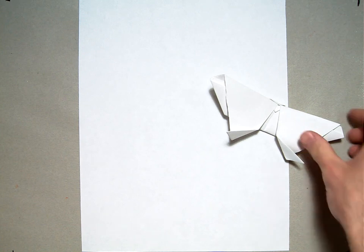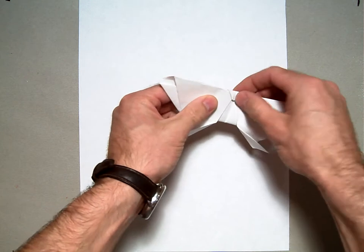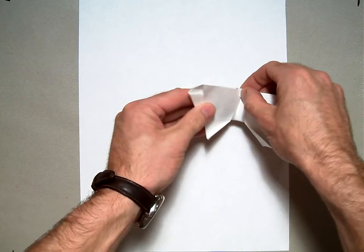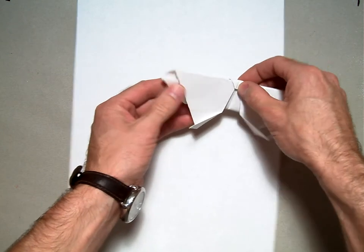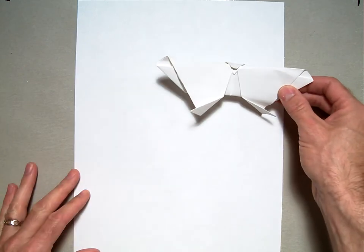Welcome back. In this demonstration, I'm going to show you how to fold this origami butterfly. It looks something like this. It uses mostly valley folds and one pleat fold, so I'm going to introduce the pleat fold on this assignment.